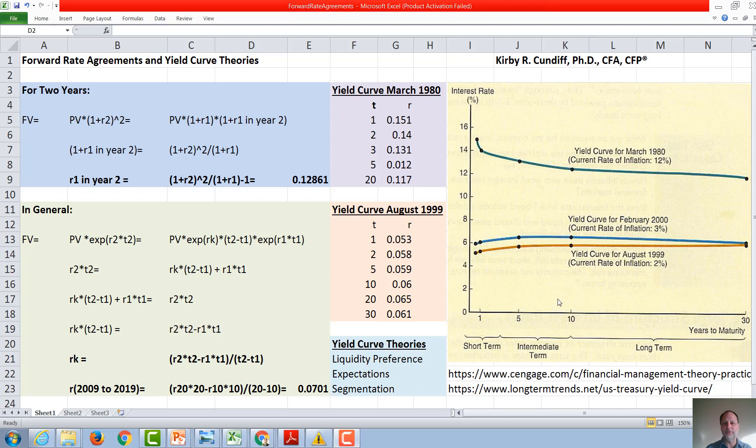This would explain phenomena like we see right here, where in August of 1999, you generally had an upward sloping yield curve consistent with liquidity preference theory, but at the very end, the 20-year to the 30-year maturity, it went back down. And this is commonly explained by organizations like insurance companies and pension plans, which have very long-term liabilities wanting to match the long-term liabilities with long-term assets and creating a demand for 30-year bonds.